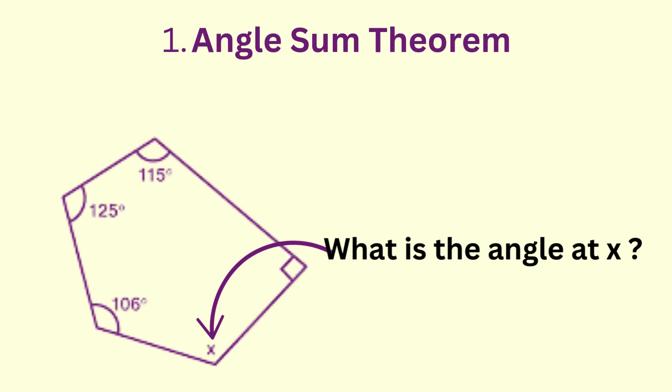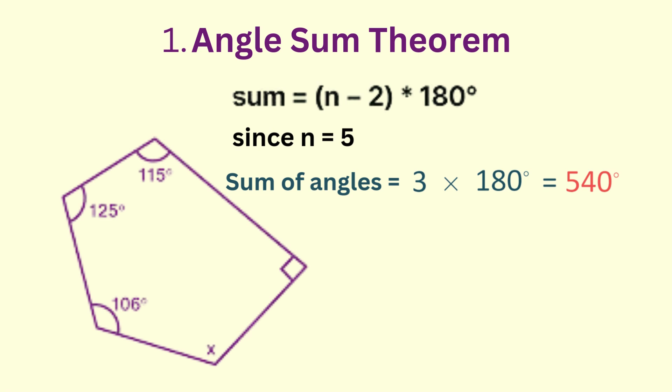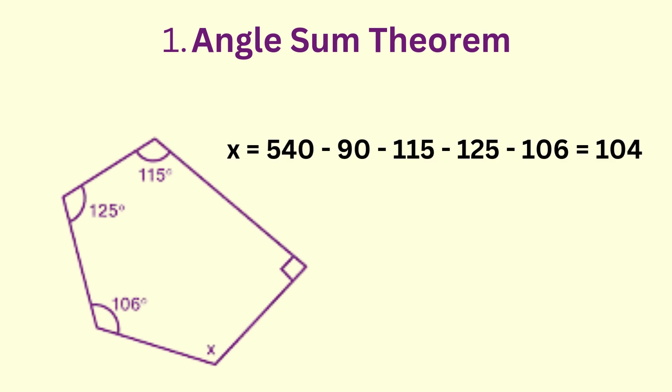Let's try an example. The polygon below has five sides, therefore the interior angles should add to give three times 180, which is 540 degrees. We can subtract all the known angles from 540 to find the unknown angle. In this case, the unknown angle would be 104 degrees.